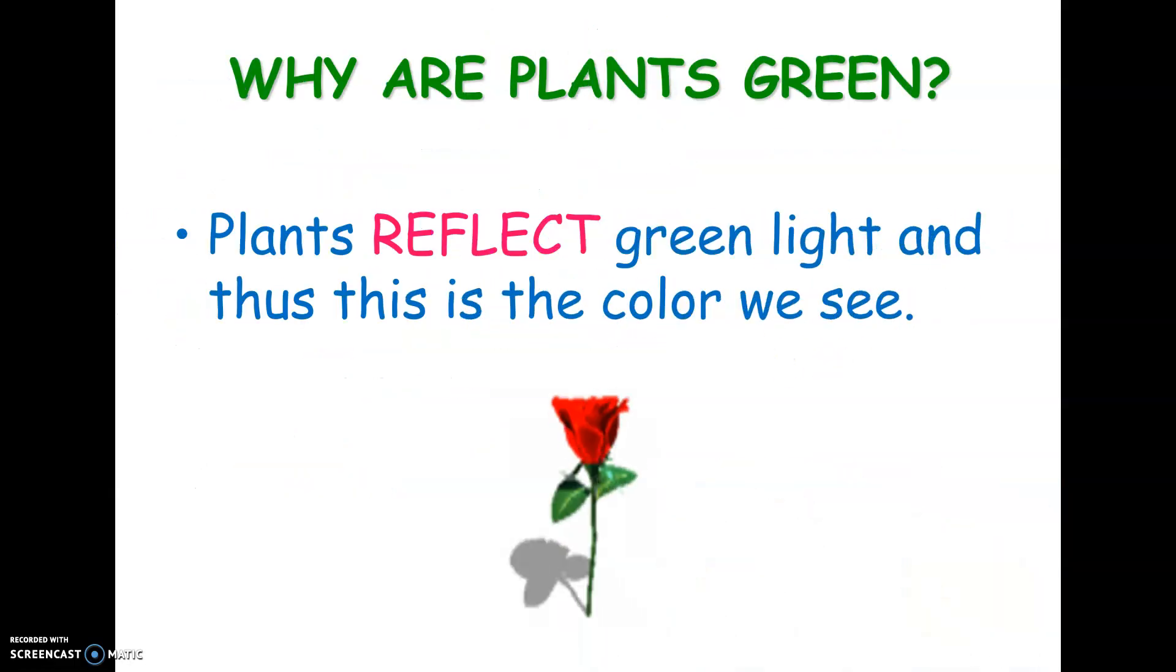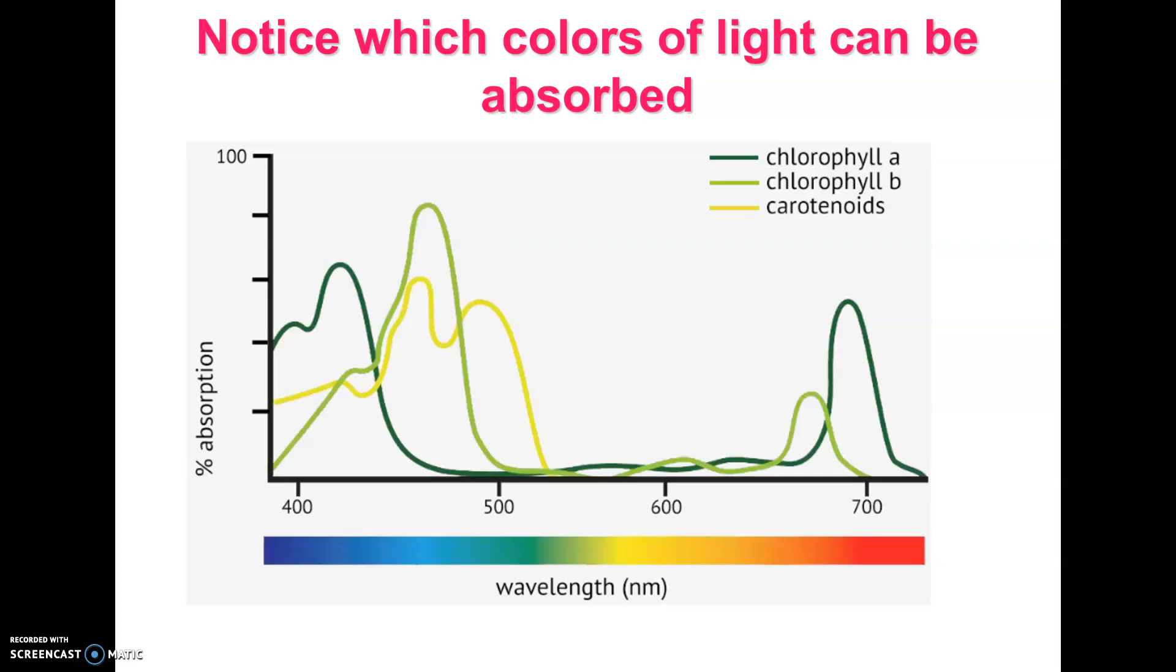So the reason plants are green, and this is really important, is that plants are actually reflecting back green light. So because green light bounces off of them, that's the color that we see. And therefore, that's why plants are green. That also means that they can't actually grow in green light.